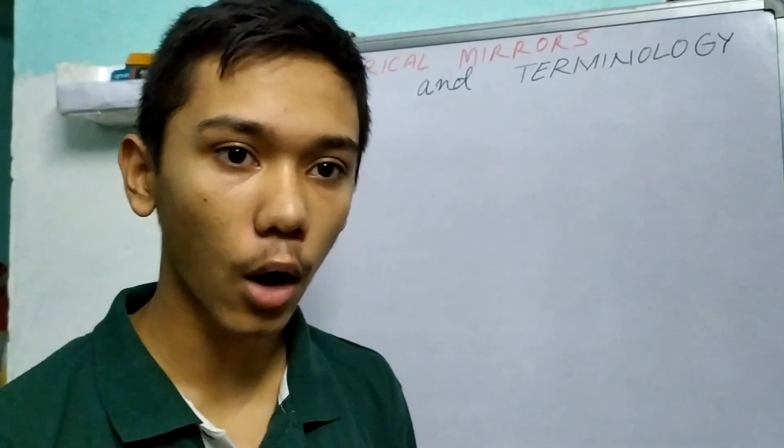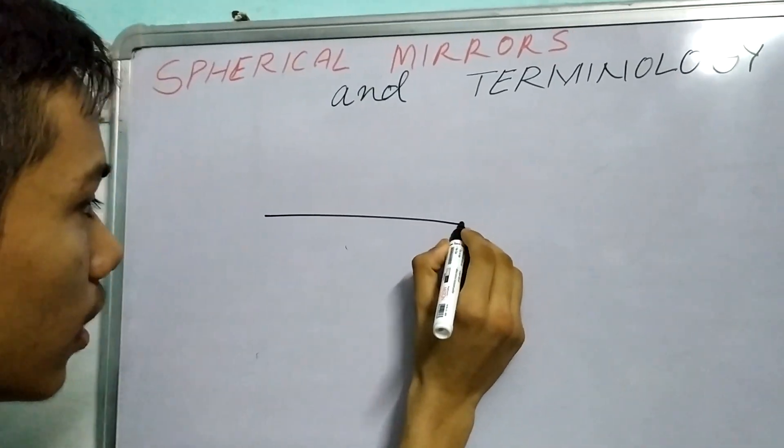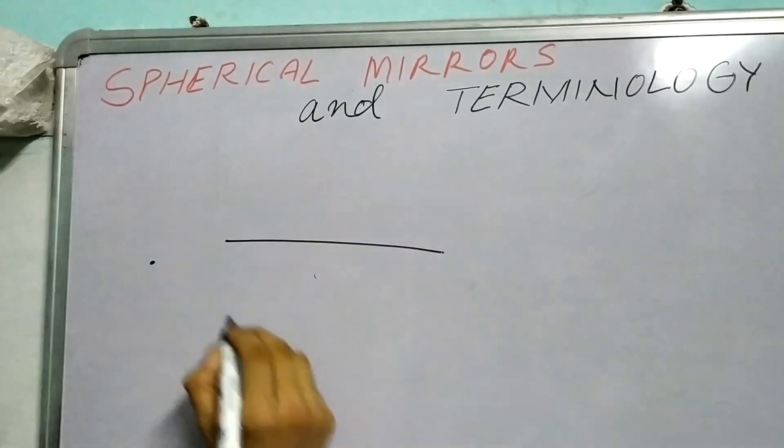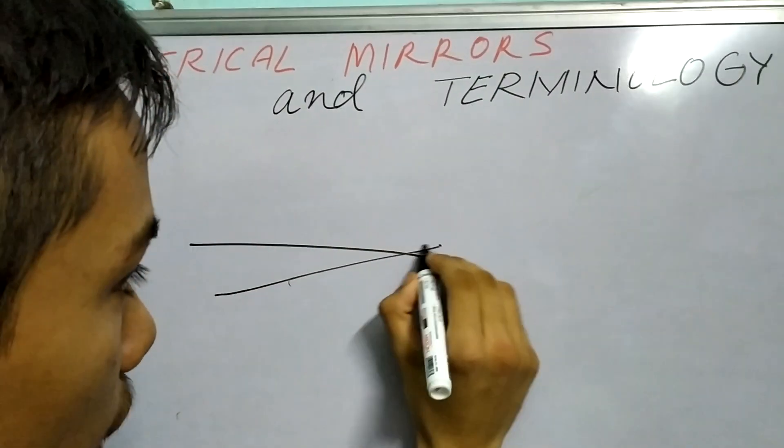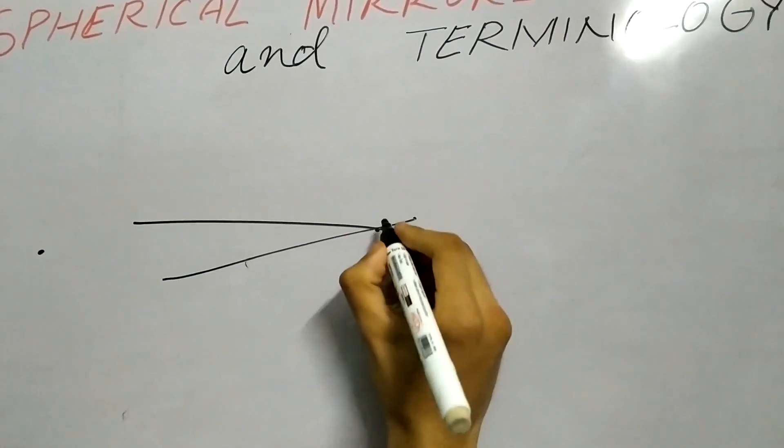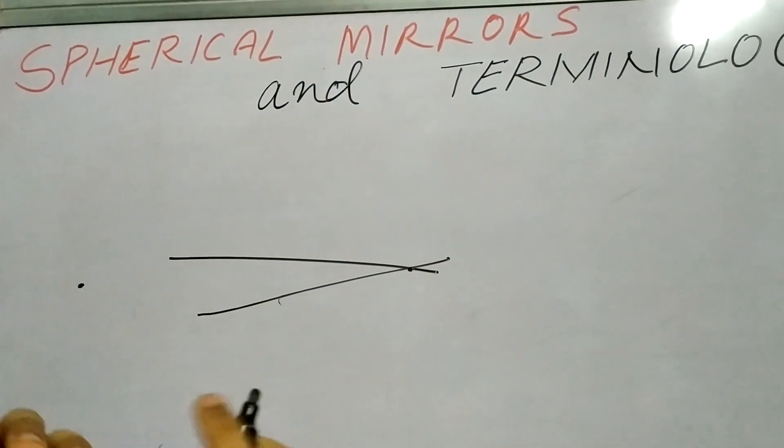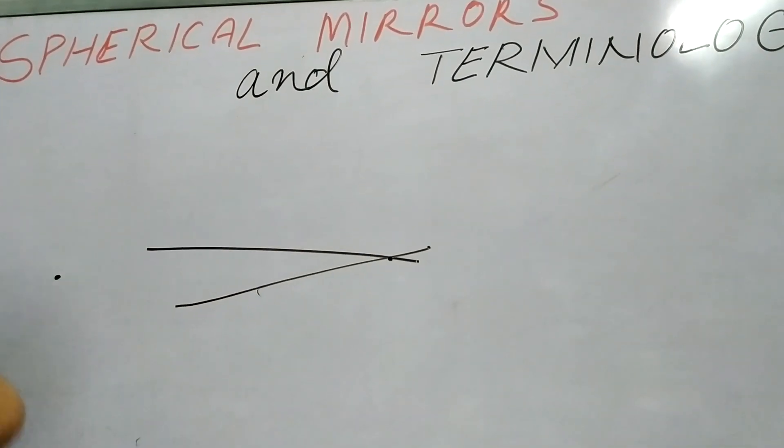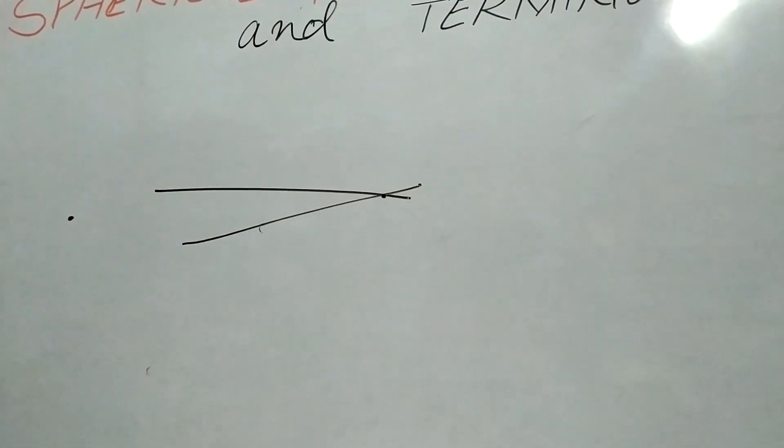Now, how will things happen? Say two rays are coming from an object and they do something, they refract or bend and they actually meet at a point. Now, to us, it will look as if the object is here itself and the image in which the rays actually meet, it's called a real image.